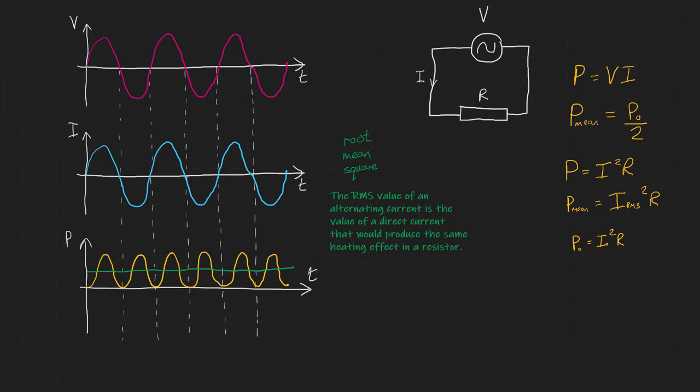And we've already established that the mean power is equal to half the peak power. So therefore we can say that peak current squared multiplied by R divided by 2, so half of the peak power is going to be equal to mean power, I RMS squared R. Cancelling R and square rooting both sides gives us an RMS current equal to the peak current divided by the square root of 2.